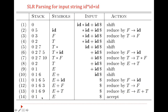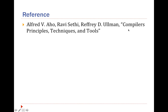Now it is the accept configuration. What remains is e, because it is the accept configuration. The string is parsed and it is a valid string. This is how parsing for the given input string is done using the SLR parsing table. The reference for this video lecture was the book on Compilers by Alfred Aho. Thank you.